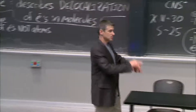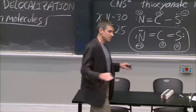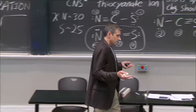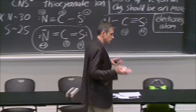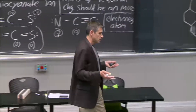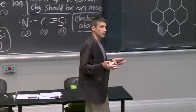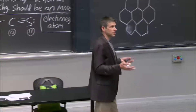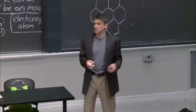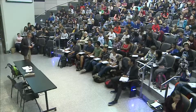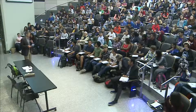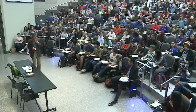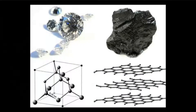There are two very well-known phases of pure carbon: one is diamond, and the other is graphite. Does anybody know which one is more stable?